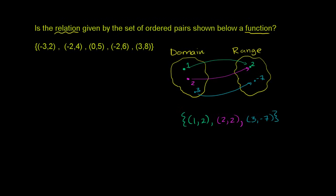In a few seconds I'll show you a relation that is not a function. Because here, you pick any member of the domain, and the function is really just a relation — an association, sometimes called a mapping, between members of the domain and particular members of the range. So you give me any member of the domain, I'll tell you exactly which member of the range it maps to. You give me 1, it maps to 2. You give me 2, it maps to 2. You give me 3, it's associated with negative 7. So this relation is also a function.